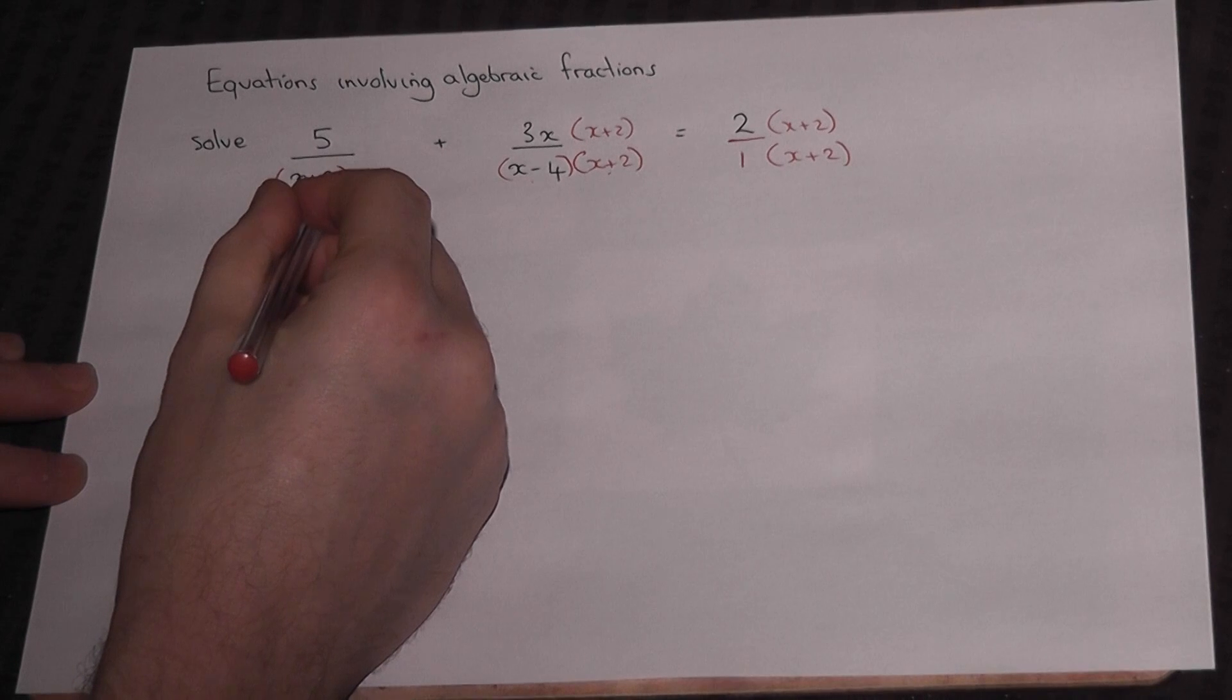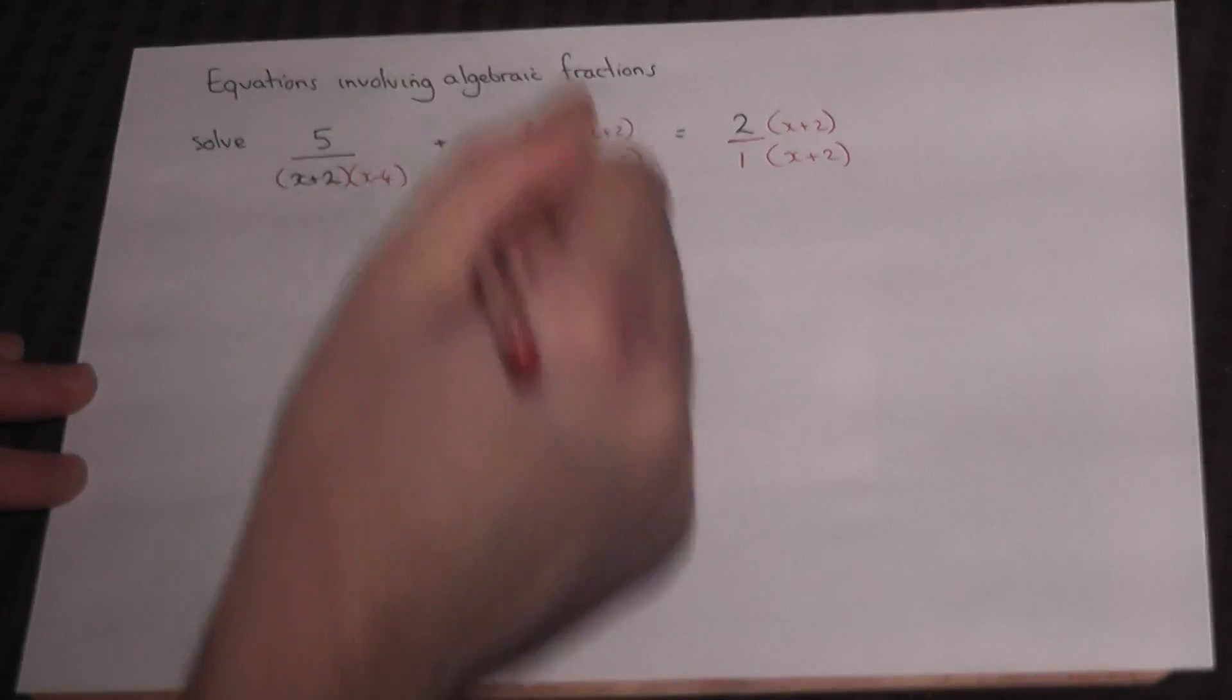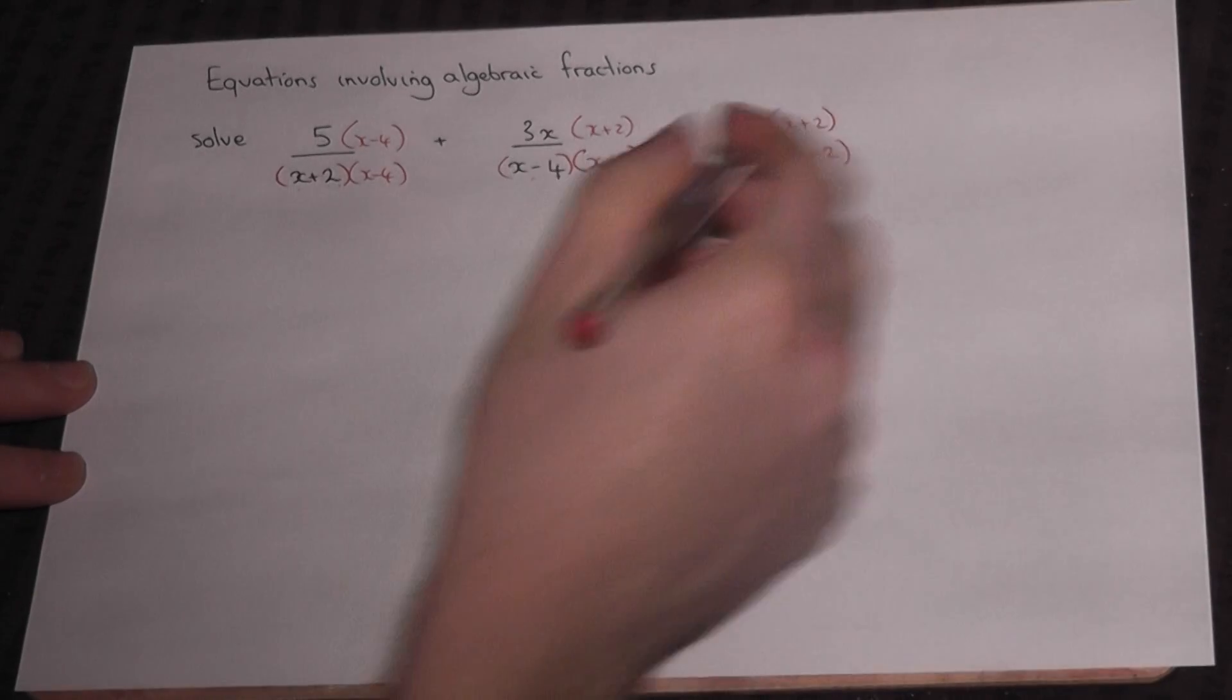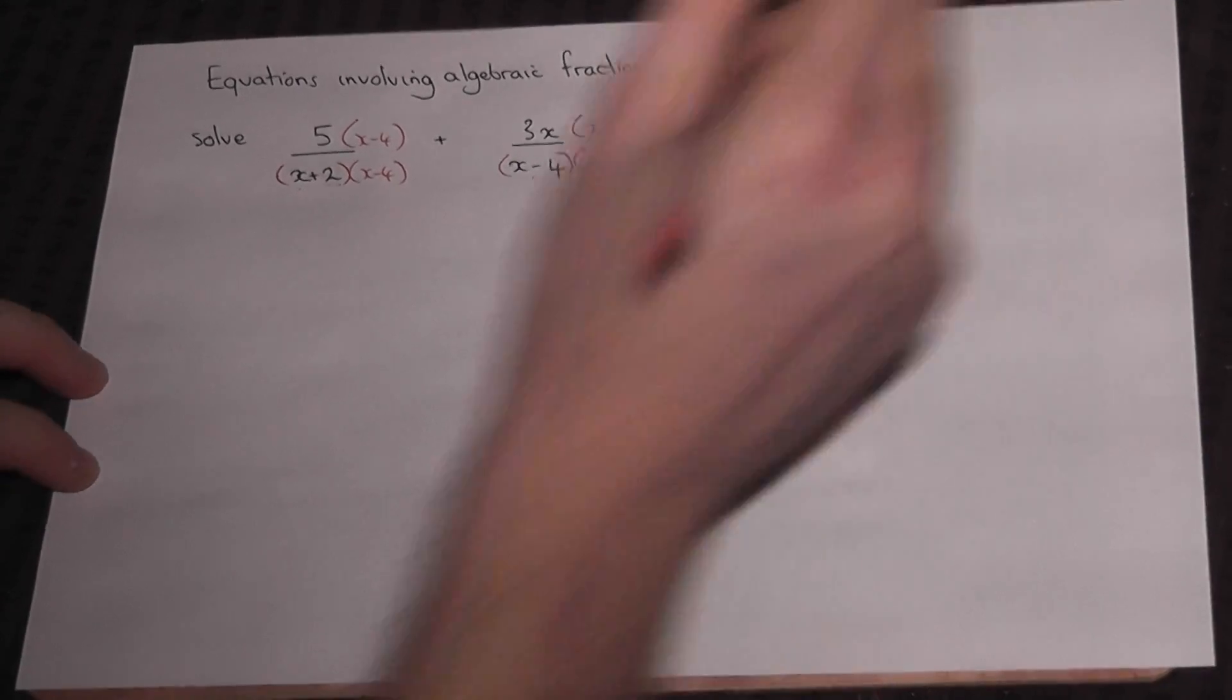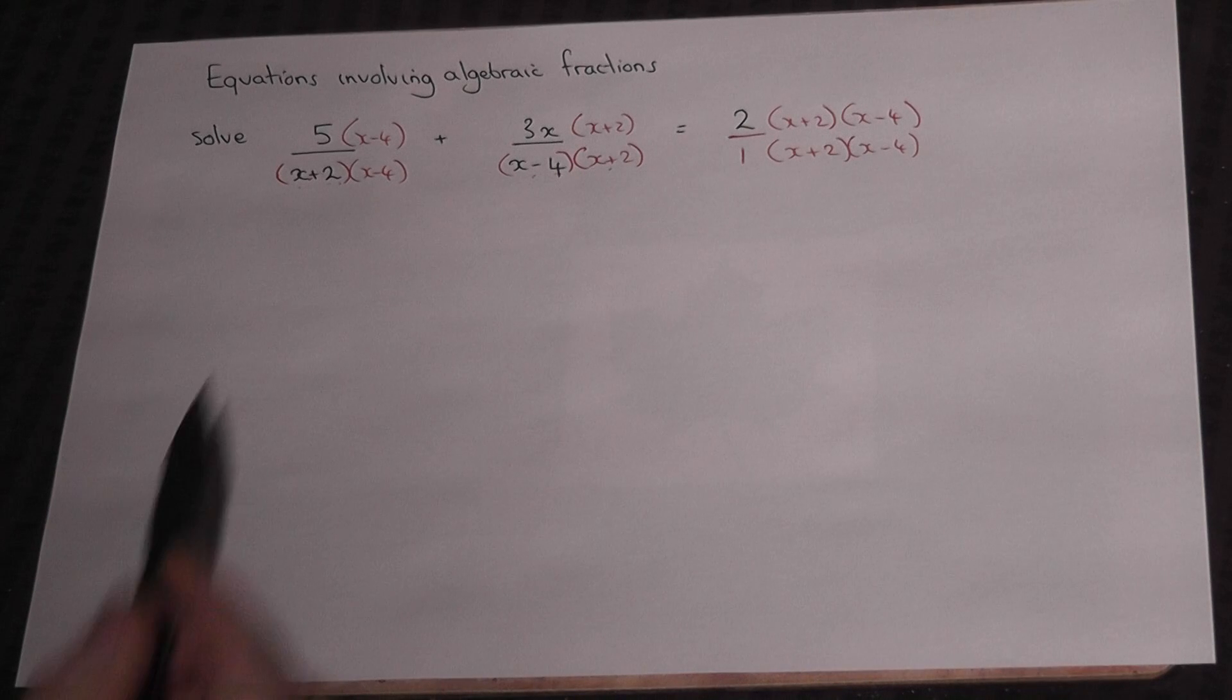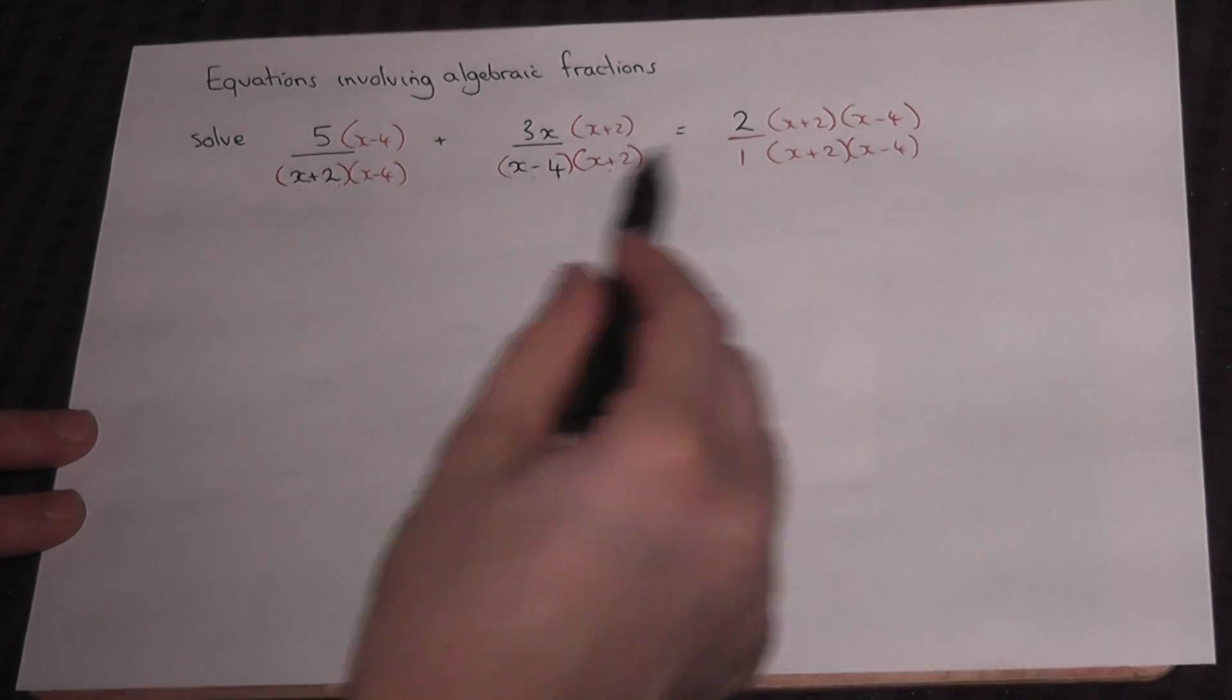So that's the x plus 2 dealt with. I then take the x minus 4 and do the same thing, forcing it in down here and therefore on top as well, and also into the one over here. These three parts now share a common denominator, albeit swapped around for the middle one, but it's there in all three.